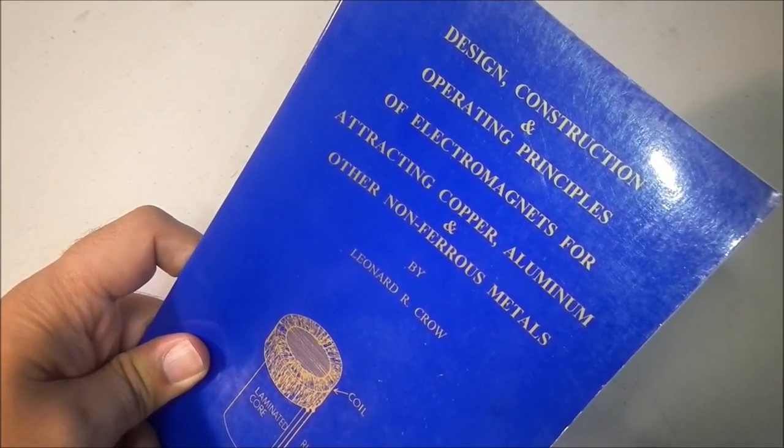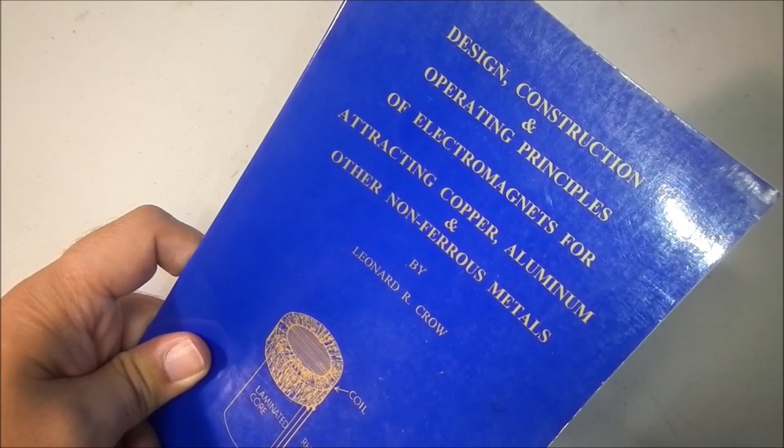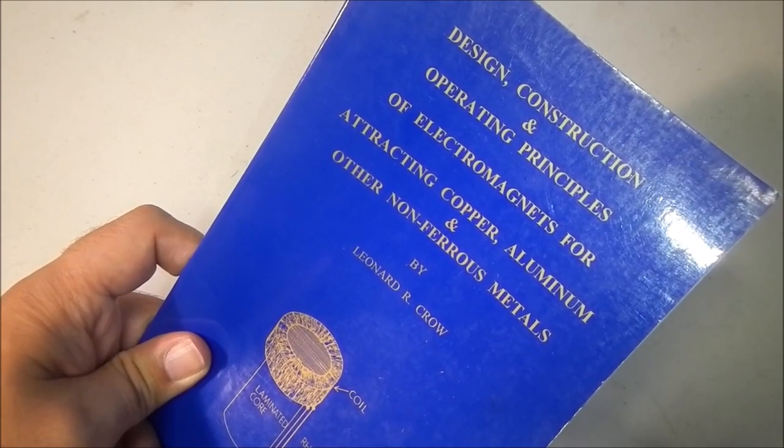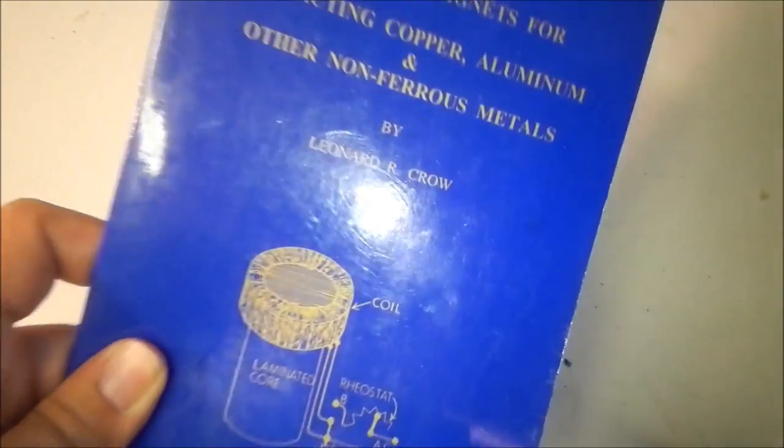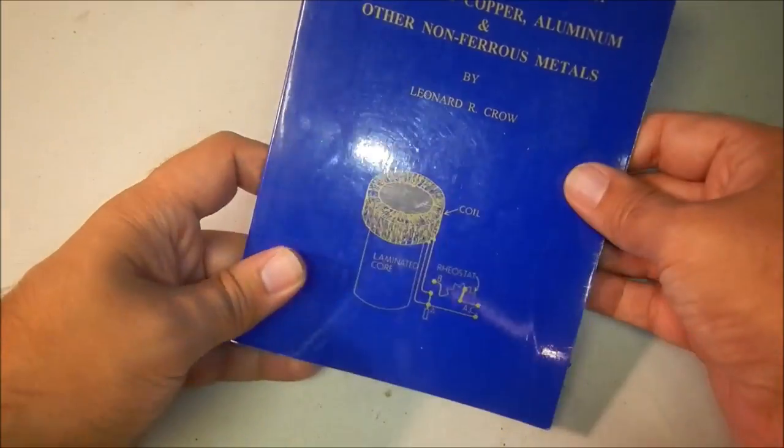Design, Construction, and Operating Principles of Electromagnets for Attracting Copper, Aluminum, and Other Non-Ferrous Metals by Leonard R. Crowe. This is an illustration of his invention.